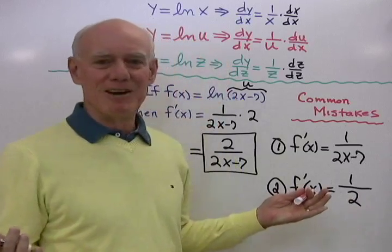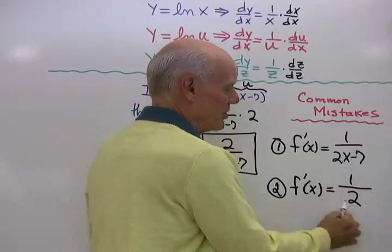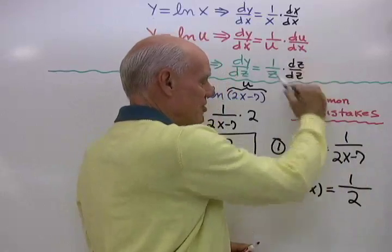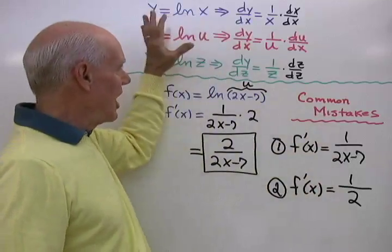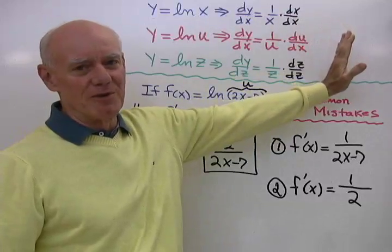f prime of x equals 1 over the derivative of 2x minus 7, which is 2, right? So here the person that does this kind of combines these two things together and gets this. But doing derivatives like this is not doing derivatives the way they're described right here.